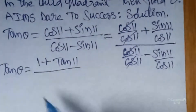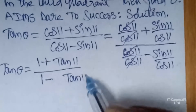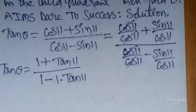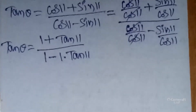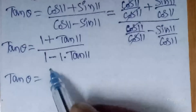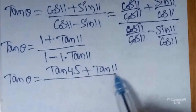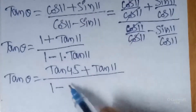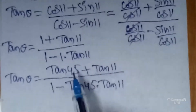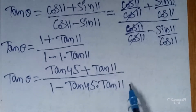Divided by 1 - tan11. So after completing this, I wanted to write 1 as tan45, related to the formula. My students, I am writing: tan θ = (tan45 + tan11) / (1 - tan45·tan11). This is in the form of (tan A + tan B) / (1 - tan A·tan B).